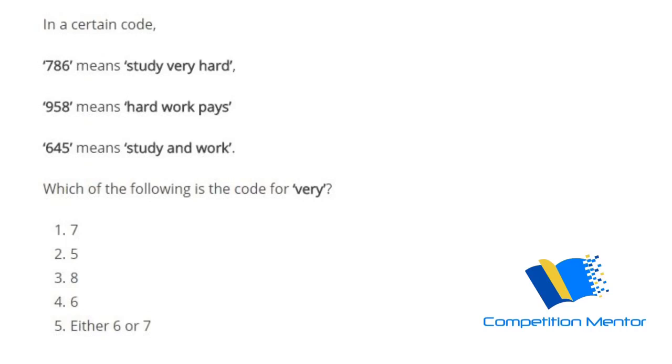Now, as you can see in this question, it's saying in a certain code, 786 means study very hard, 958 means hard work pays, 645 means study and work. Which of the following is the code for very?